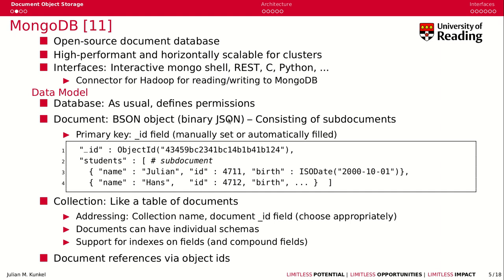Internally, it actually stores this JSON as BSON, which is a binary JSON. The sub-documents in this example are the students, which is this array of additional sub-documents. Then you have a collection, which is like a table of documents — not a single document, but many. You can address and find a document by specifying the collection name and using, for example, the ID in each document. Documents can have different schemas, but typically you impose a schema at the collection level. You can also have indexes on different fields, and typically you use references via the document ID.